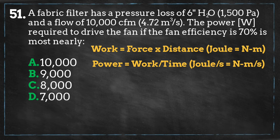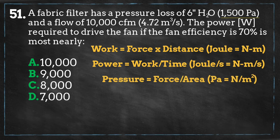We have the pressure drop — the effect of a force applied to a surface — which equals 1,500 pascals. A pascal is defined as the force of one Newton per square meter. We also have the flow rate, which is 10,000 cubic feet per minute or equal to 4.72 cubic meters per second. We can multiply the pressure drop by the flow rate to get units of Newton meter per second, which equals watts.